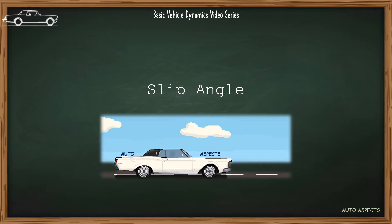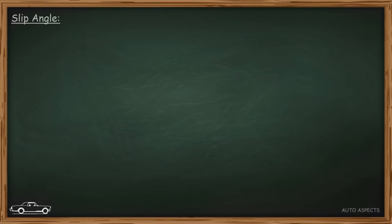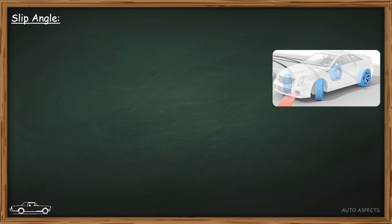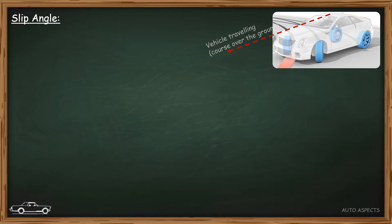So what is slip angle? To answer, let us consider a vehicle subjected to cornering. Here the difference between the direction in which the vehicle is traveling and the direction that the body of the vehicle is pointing is termed as slip angle.